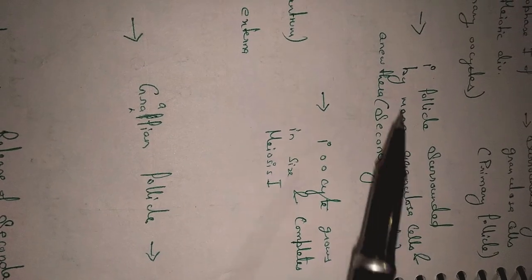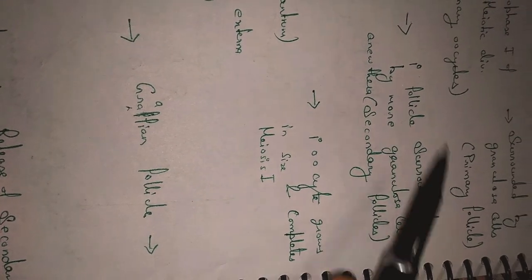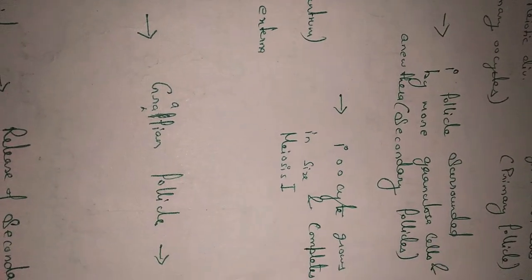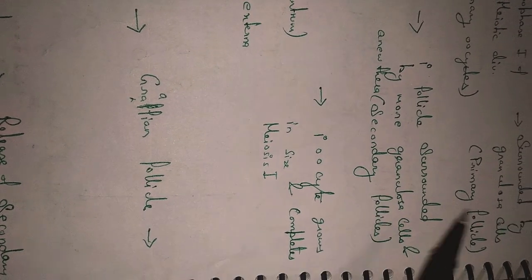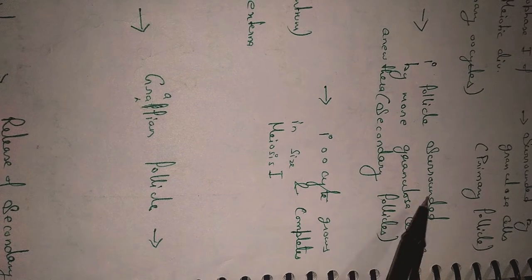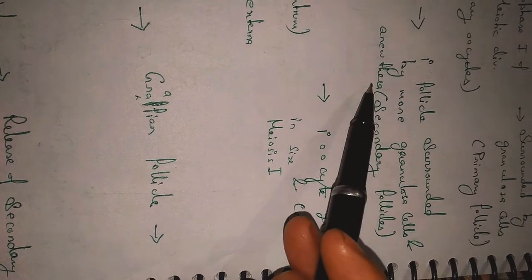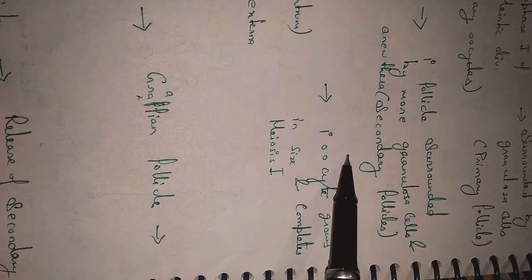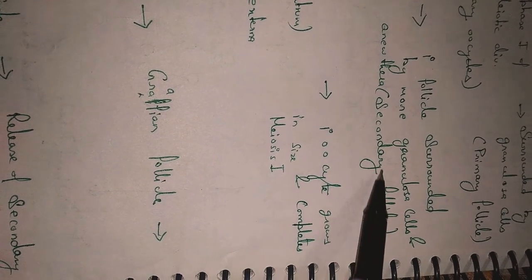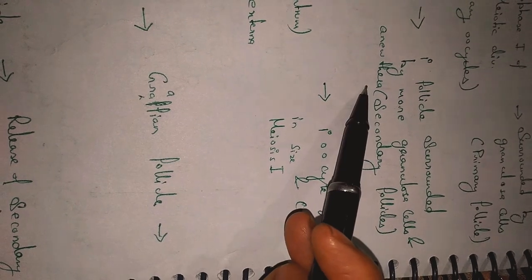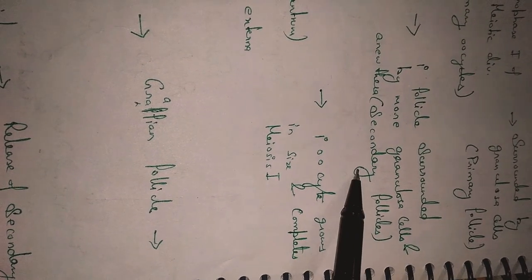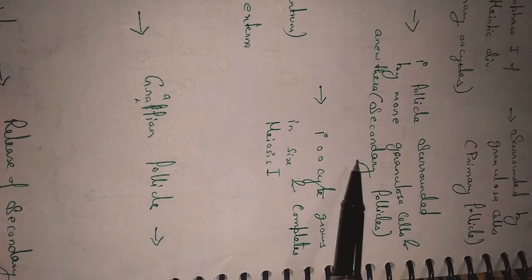The remaining primary follicles then get surrounded by more granulosa cells. The granulosa cells form additional layers around the primary follicle, and this new structure is named the secondary follicle.